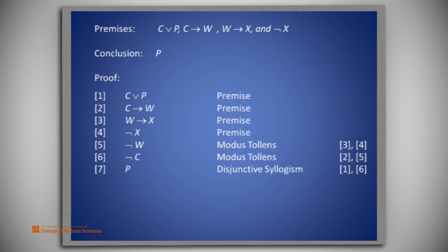Finally, with C being false on line 6, and C or P being true on the first line, P is true using disjunctive syllogism. That was the conclusion we sought.